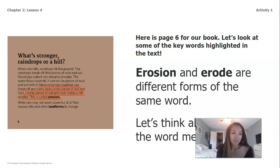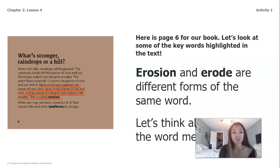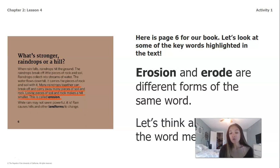Many raindrops together can break off and carry away many pieces of soil and rock. Losing pieces of soil and rock makes a hill smaller. This is called erosion. Erosion and erode are different forms of the same word.